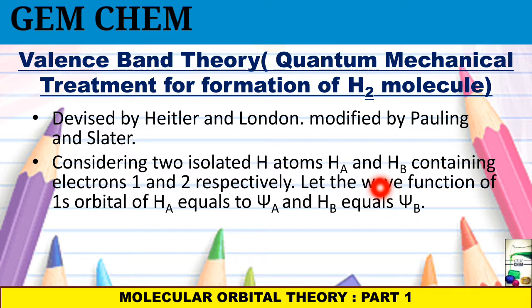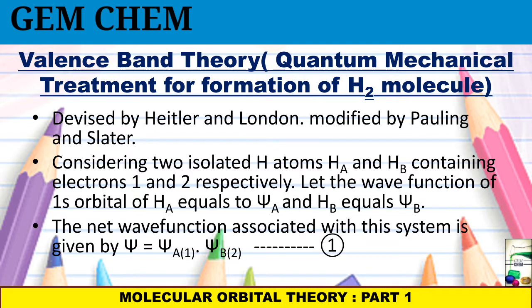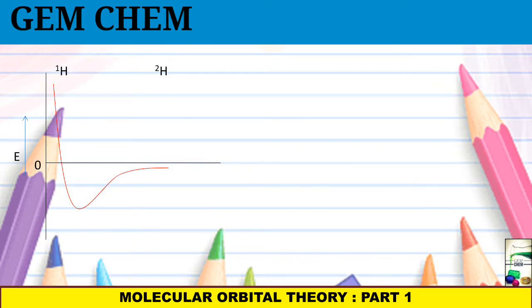We have already learnt about wave functions in the first chapter of atomic structure — you can refer to that via the link in the description box or the i-button above this video. Since we have two quantities for an H2 molecule, ξA and ξB, the net wave function can be written as a multiplicative function: ξA(1) × ξB(2). This is equation number one. Next, we look at a graph obtained by experiment, alongside different theoretical graphs.